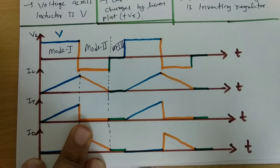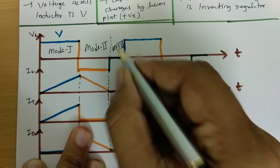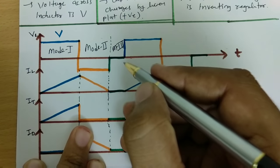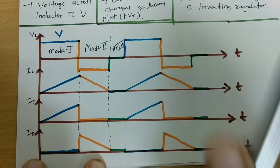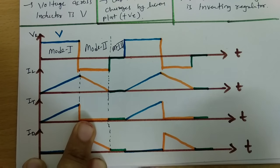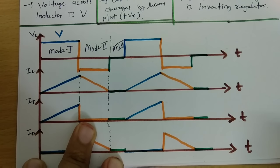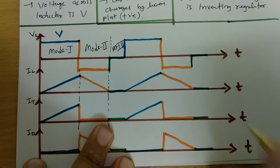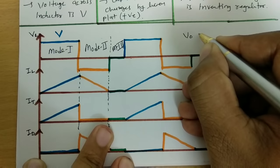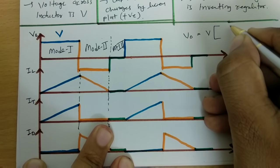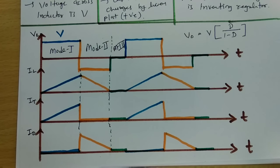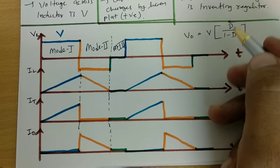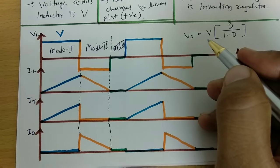In discontinuous mode, this circuit functions as either a buck or boost regulator. If you calculate the voltage, it equals V multiplied by the duty cycle D divided by (1 minus D). So if the duty cycle is kept such that it results in a lower output, that is a buck regulator. For example, if duty cycle is 0.25: 0.25 divided by 0.75 gives V by 3, which is lower than V - so that is the buck converter behavior.